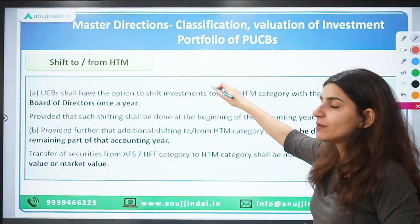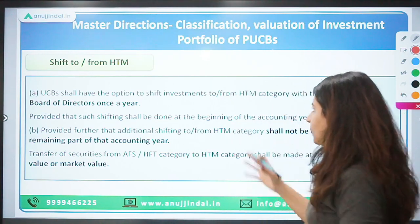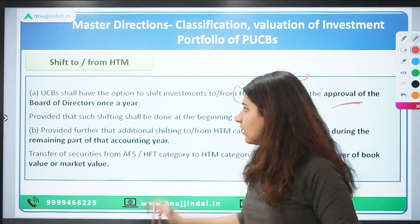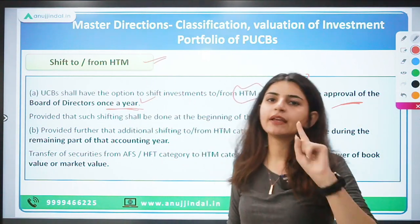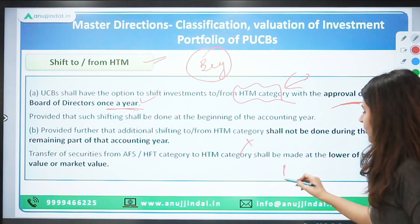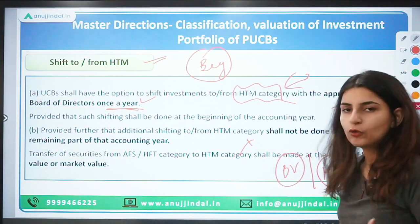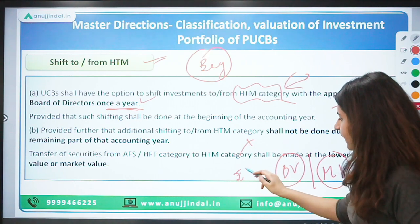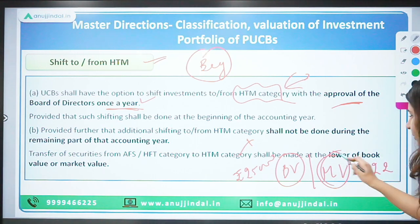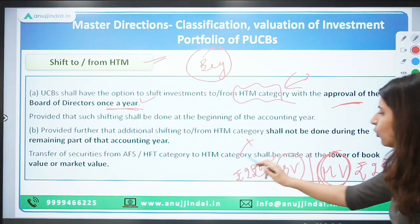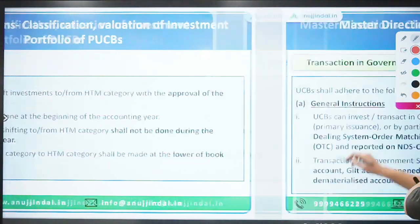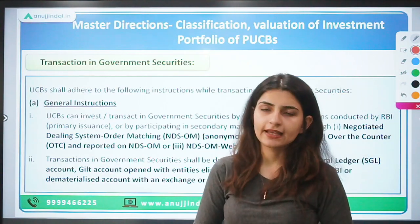UCBs have the option to shift securities from one category to another, including to and from the HTM category, but this requires approval from the Board of Directors. This shift can only be done once a year, at the beginning of the year. The book value and market value of the security at the time of shifting must be recorded.